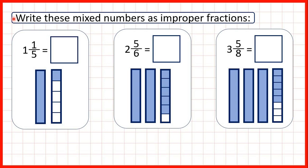We need to write these mixed numbers as improper fractions. So first we have 1 and 1 5th. That's a mixed number because we have a whole number and a fraction and we need to change that to an improper fraction.